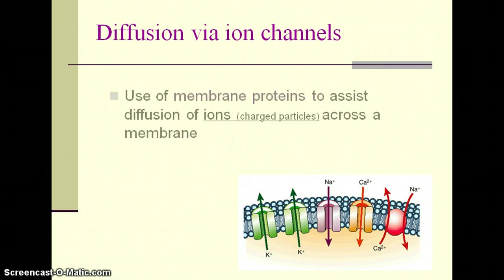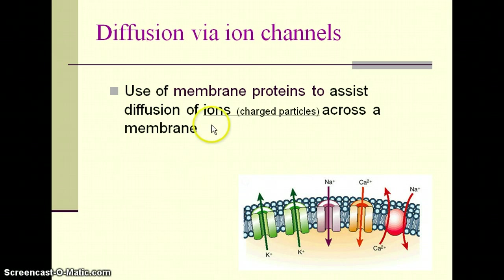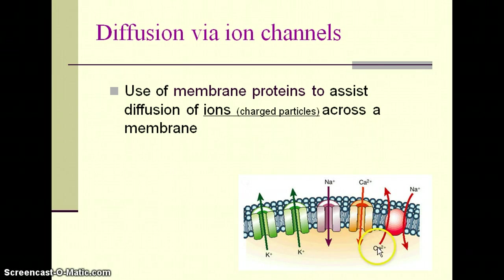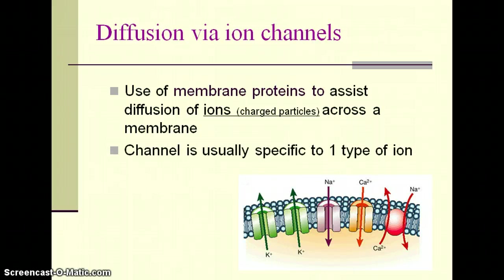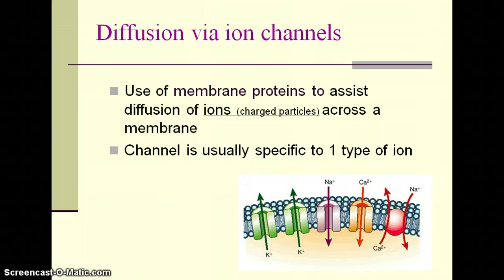Another version of diffusion is diffusion with ion channels. Ions are just charged particles — things like sodium (plus one), chlorine (minus one), or calcium (plus two). Calcium, potassium, and sodium are examples of things that have been dissolved and are now ions, having given up or taken electrons. These proteins are specific to one type of ion. You can see in the picture they're color-coded: potassium (K) goes only through the green channel, and sodium goes only through the purple channel — they are specific to the type they allow to cross.